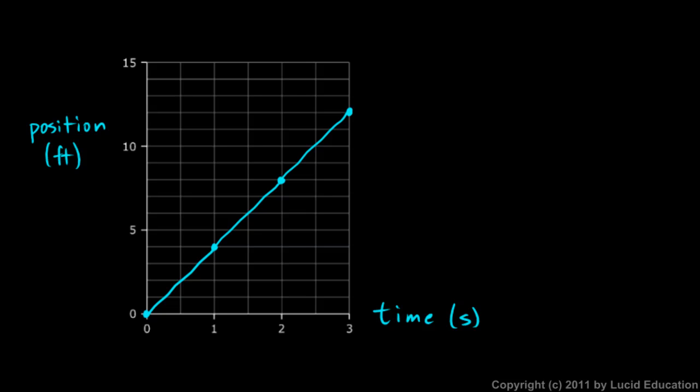So this graph shows us where the car is not just at 1 second, at 2 seconds, and at 3 seconds, but at any time. So for example, at 1.5 seconds right there, you can come up here. And that corresponds to this point on the graph. And that point corresponds to this position right here, which you can see is x equal to 6. So at time 1 and a half seconds, it's at position x equals 6. And you can see it any time.